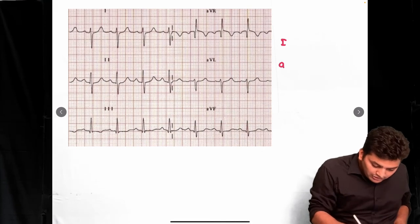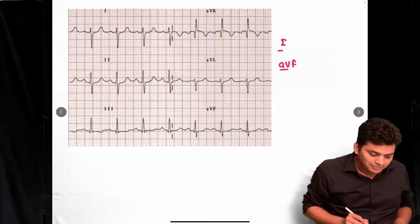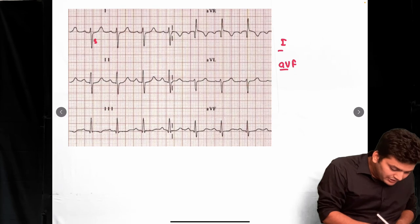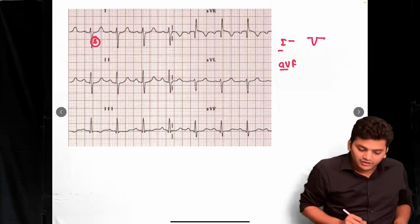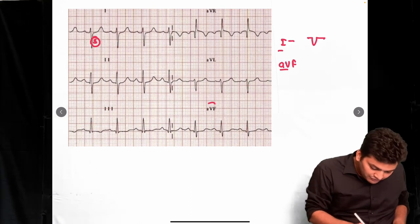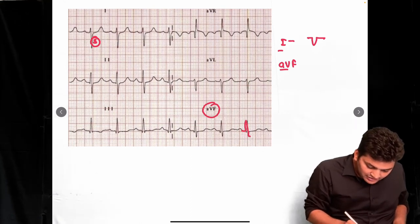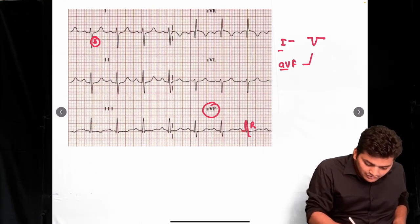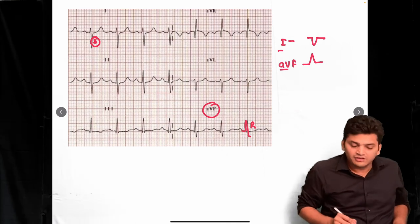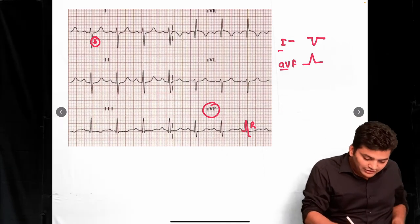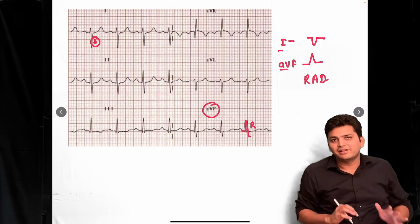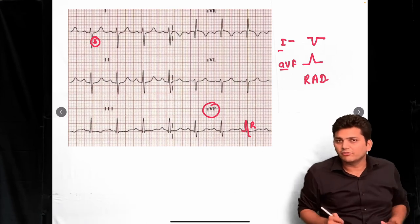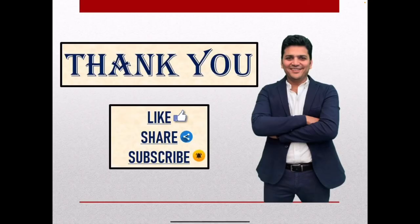In the next example, looking at Lead I, the S wave is bigger than the R wave, so Lead I is negative. In AVF, the R wave is bigger, so AVF is positive. They are approaching towards one another — this is right axis deviation. This is how you find out left axis, right axis, or normal axis.